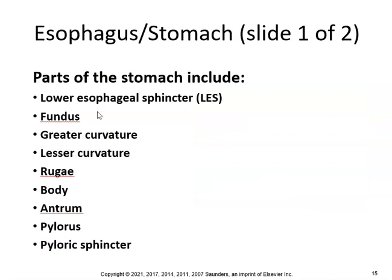The parts of the stomach include: the lower esophageal sphincter, the fundus, the greater curvature, the lesser curvature, the rugae body, antrum, pylorus, and the pyloric sphincter. The esophagus is about 9 to 10 inches — a muscular tube that extends from the pharynx all the way to the stomach.